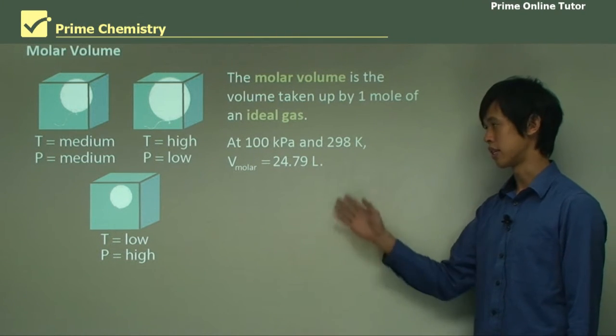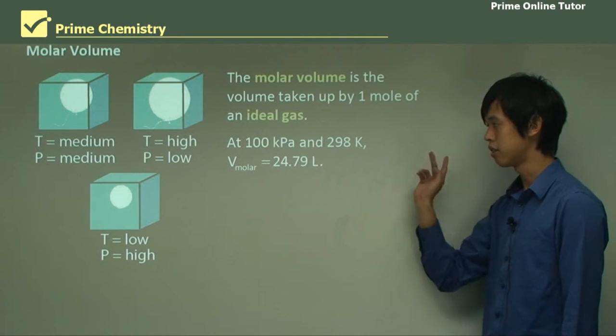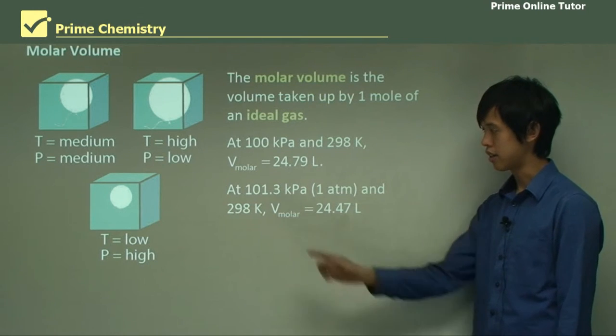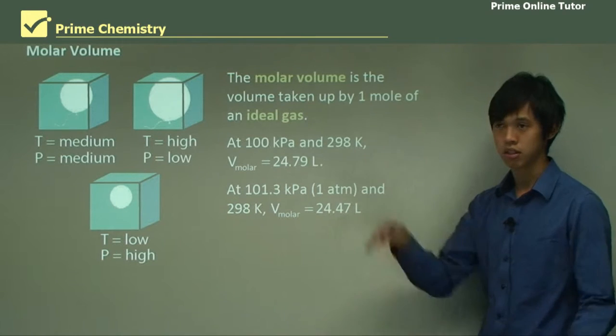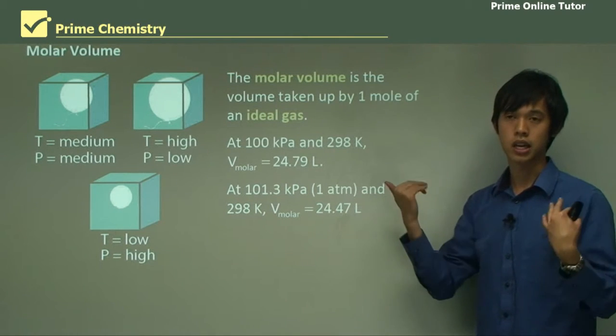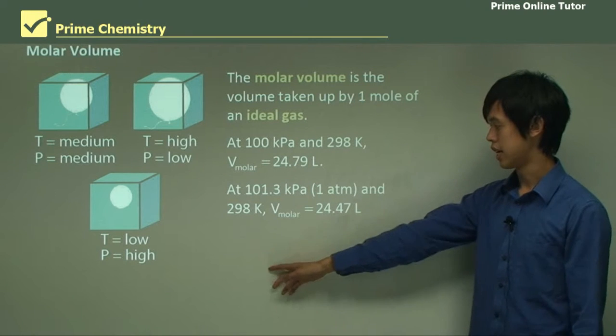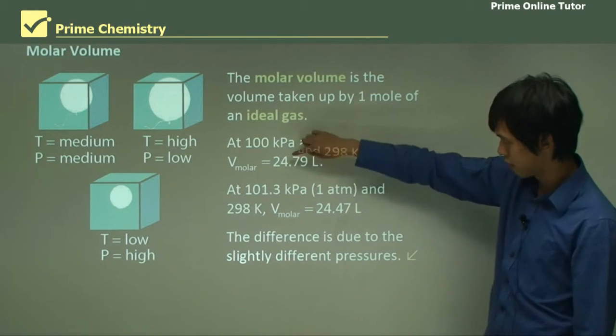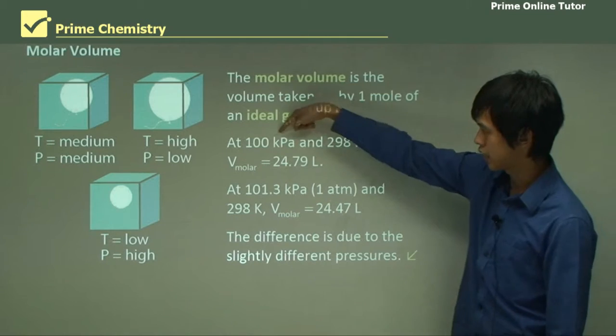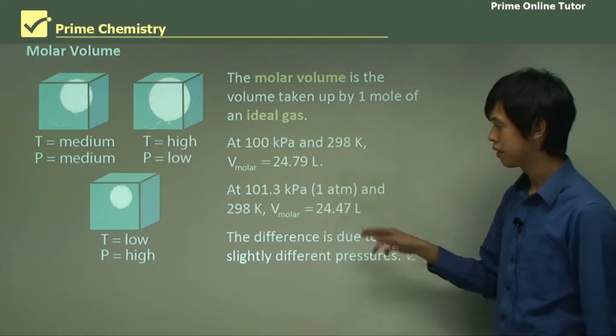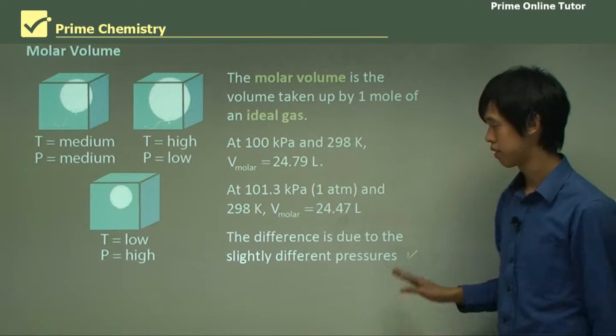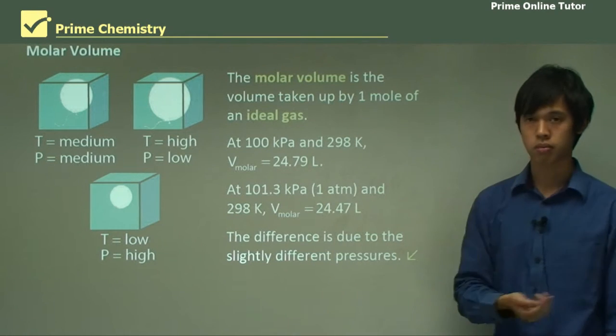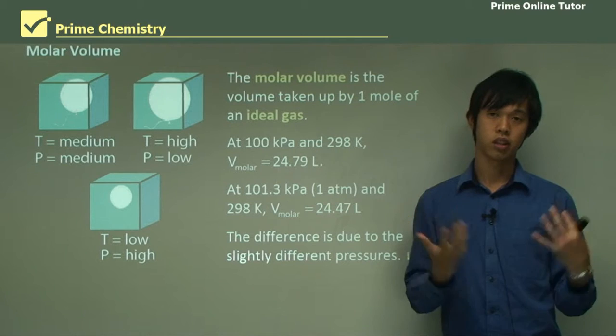That's why whenever we have the back of the periodic table, it always specifies what the temperature and pressure are for that molar volume and under what conditions that molar volume actually happens. So if you look on the back of your periodic table, you'll see things like at 100 kilopascals and 298 Kelvin, the molar volume is this. Alternatively, it could be this at 101.3 kilopascals, which is what we call one atmosphere, and 298 Kelvin is 24.47. Now the difference, this very slight difference, is due to the different pressures. This is a slightly lower pressure, so the volume is slightly bigger. This is slightly more pressure, so the volume is a little bit smaller.